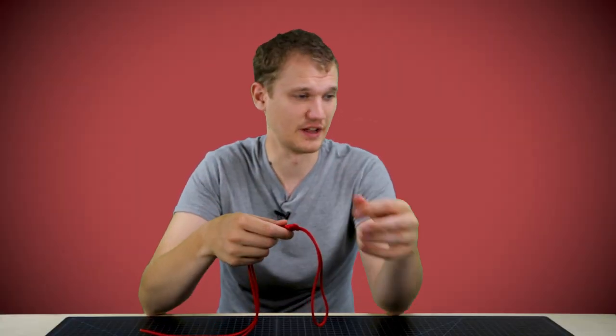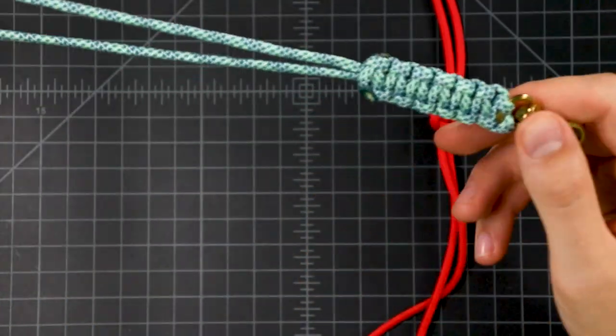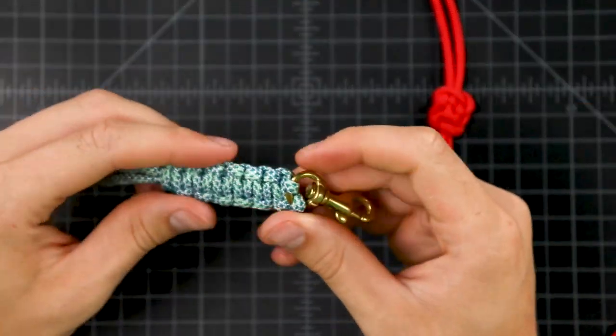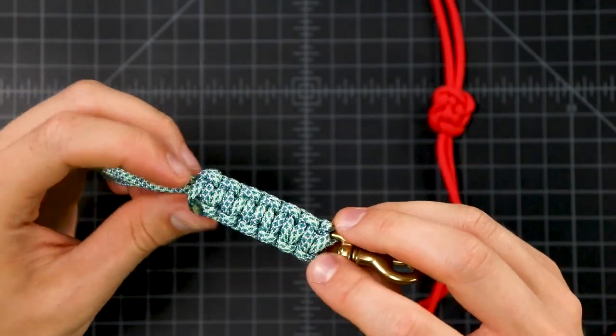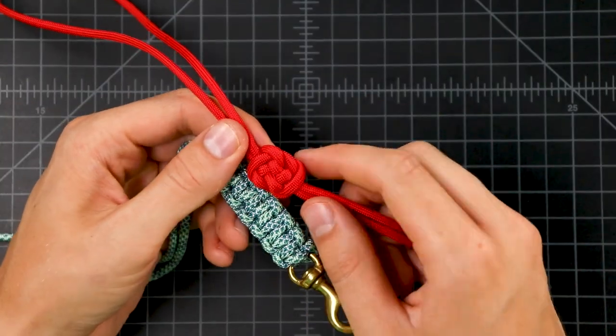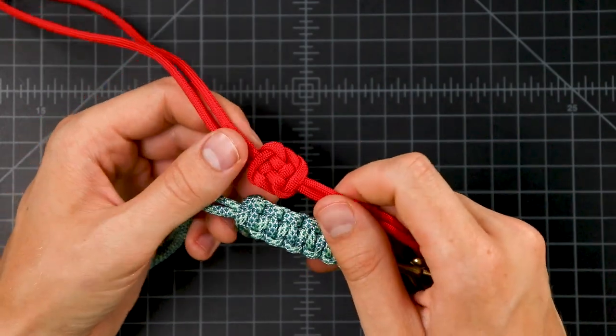As this is called a Chinese lanyard knot, it definitely would look cool on a lanyard. On one like this - this is just a very basic lanyard that we have a tutorial for - instead of doing the cobra knot, you could do one or two knots like this and it would definitely look like a cool lanyard.